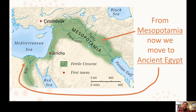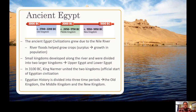Now we're going to switch gears to the second part of the topic — ancient Egypt. Ancient Egypt is another one of the ancient civilizations that grew up by a river, in this case the Nile River. The Nile River flooded, helping crops grow, creating a surplus and a population growth. Because of that surplus, people could start doing other jobs and the civilization sprang up along this long river. In 3100 BC, King Narmer united the two kingdoms — Upper Egypt and Lower Egypt — and that becomes the official start of Egyptian civilization, about 5,000 years ago.